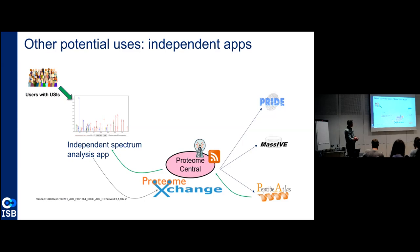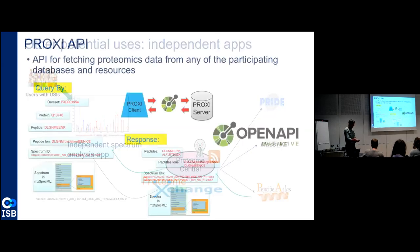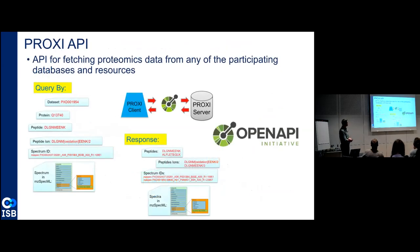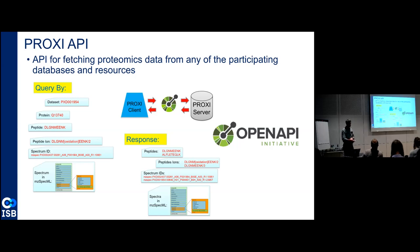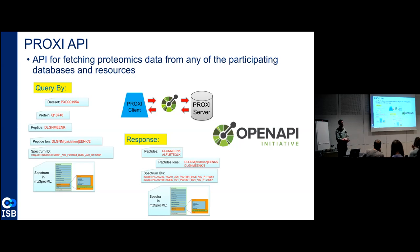One thing this does require is an API underneath all of this to be able to do spectrum querying and passing. We're working as part of this overall project on something called PROXI — an API for querying and fetching proteomics data. It uses the OpenAPI specification to be able to query by dataset, by protein, by peptide ion, or by spectrum ID in the form of a spectral identifier, and ask individual repositories for information. We're actually funded to do this — Pride, Peptide Atlas, and Massive have a three-way grant to implement PROXI. It's not done yet, but we've made good progress.